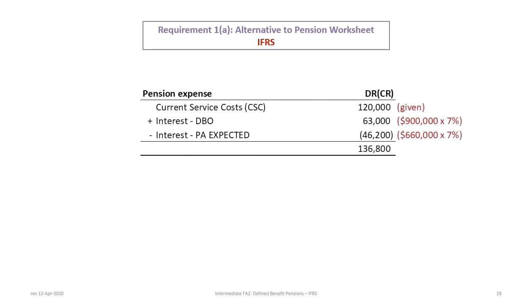The last alternative is the pension expense. The pension expense includes current service costs (given), plus interest on the DBO calculated as 7% of the beginning balance, minus the expected interest on the plan assets — also based on the beginning balance: $660,000 × 7%. That expected return is a negative offset to the expense, giving us a pension expense of $136,800.